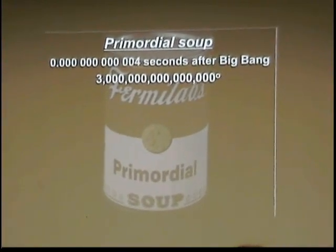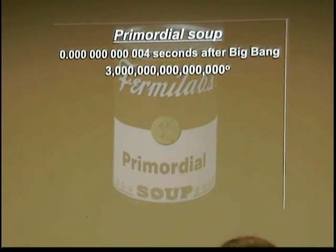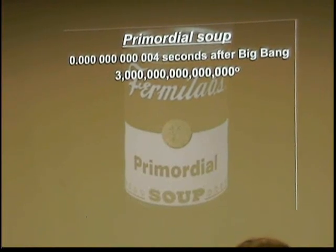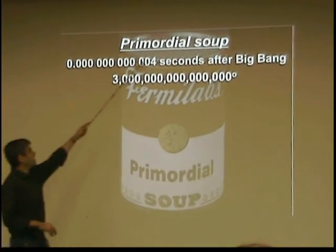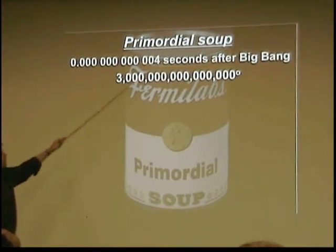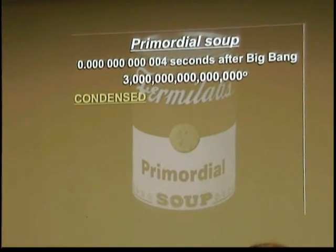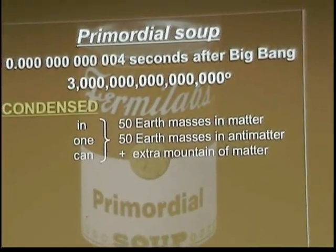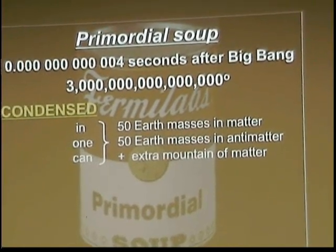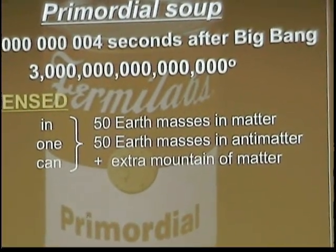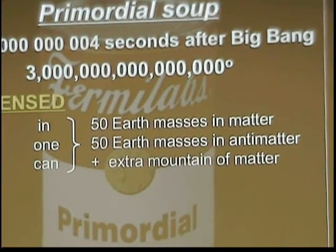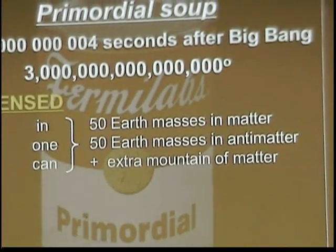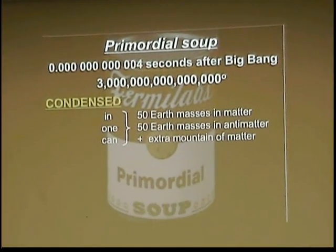Let's look at that very beginning — that instant following the Big Bang after inflation — where all of these types of particles exist in what's known as the primordial soup. We're a tiny, tiny fraction of a second after the Big Bang, at enormous temperature. In one soup can of volume, there's 50 times more mass than the entire Earth at this stage — it's that dense. Not to mention another 50 times the mass of the Earth in antimatter, so there are roughly equal amounts of matter and antimatter at this time.